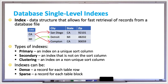In the example diagram, there is an index on the state column of the city table. Each column value is sorted in the index and has a pointer to the row where the state matches up. If the columns are not unique, then there is a new entry in the index. Each index can have multiple pointers to the same value, as in the CA example, which points to San Diego and Compton.